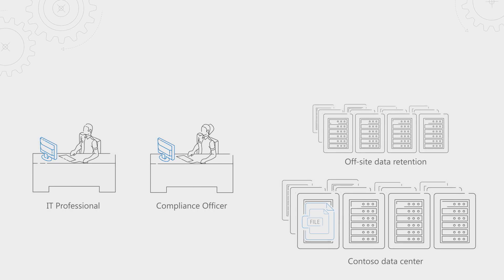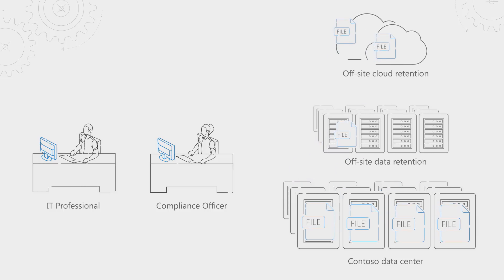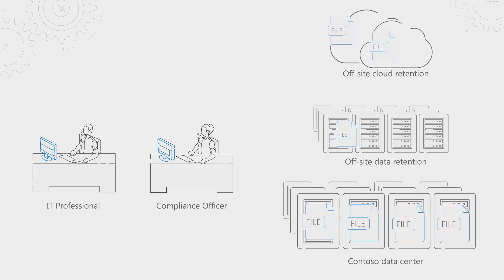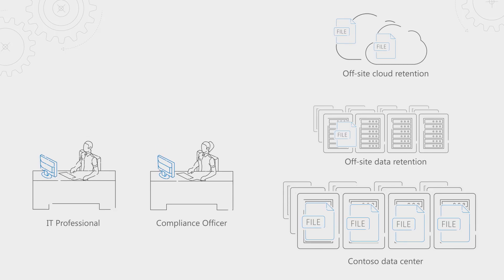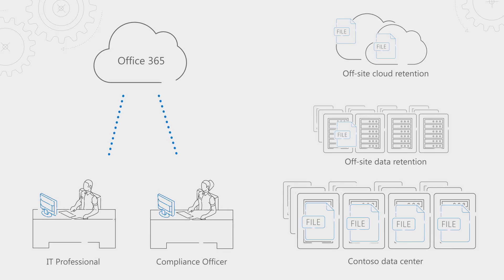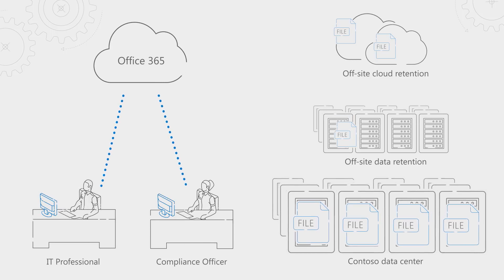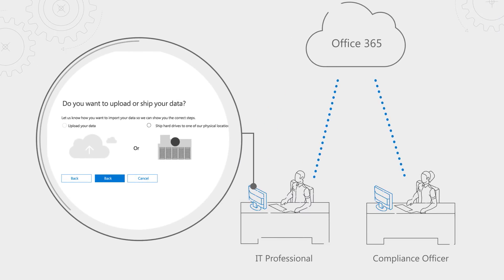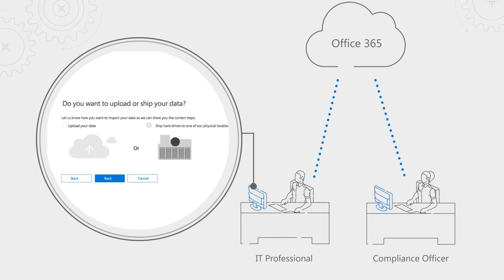Traditional ways of doing that have typically required replicating your data and placing it into an external system. This can be costly and actually increase your risk because now you have your data in multiple places — and ironically, that replication is literally the R in ROT. Our approach is to give you in-place retention and deletion in Office 365. If you have data stored on-premises or in other services, we help you bring it into Office 365's data governance to take advantage of our built-in capabilities.